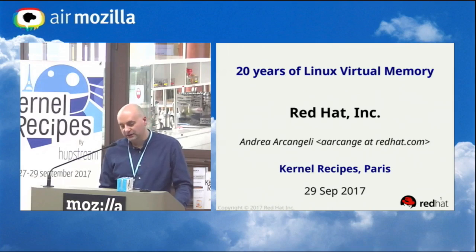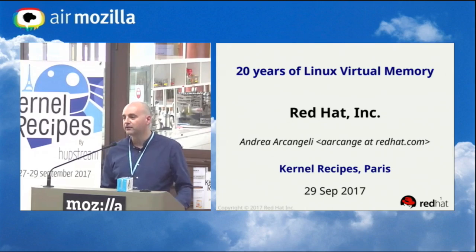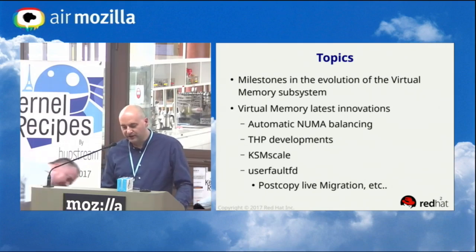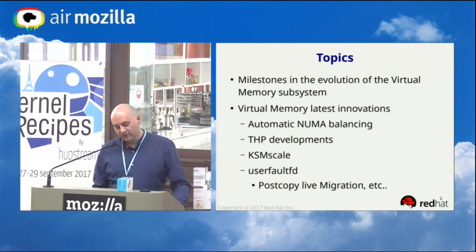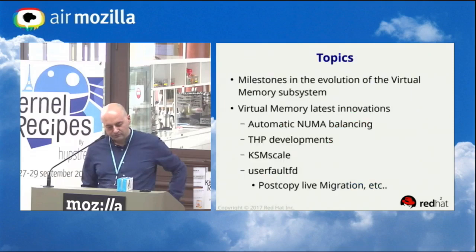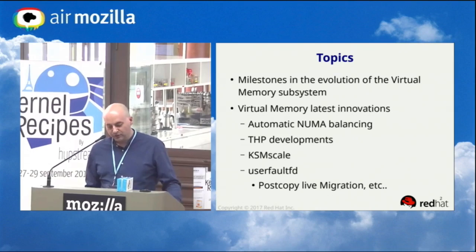I've worked on shared page tables and lately on things connected with the cloud — how to export features like userfaultfd to high-level management tools or systems like OpenStack. Today I'm going to speak about some of the basics of memory management in Linux, the major milestones, and then focus on the latest innovations. Topics include automatic NUMA balancing, THP developments, KSM scale merged in 4.13, and userfaultfd with more features merged in 4.11.